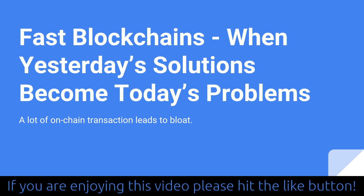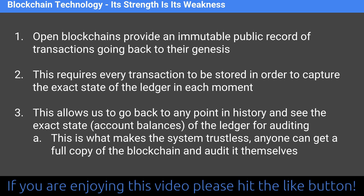Blockchain technology — its strength is also its weakness. Open blockchains provide an immutable public record of transactions going back to their very genesis. That's the whole thing about blockchains: you can go back to the beginning of the Bitcoin blockchain and see everything at every moment. In order to have immutability, transparency, and openness, every transaction must be stored to capture the exact state of the ledger at any point you might want to query.